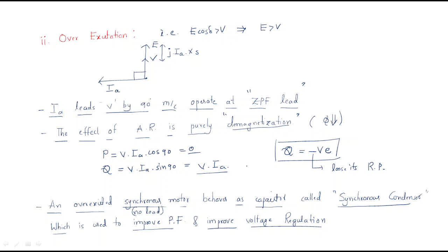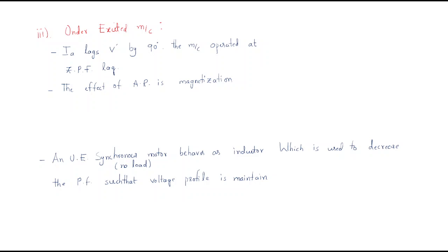So an over-excited machine under no-load condition acts as a synchronous condenser and reactive power is negative. Next, the under-excited machine. The reactive power formula is Q = (V / Xs) × (V − E·cos δ).